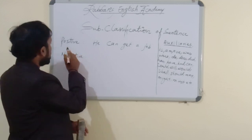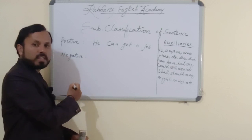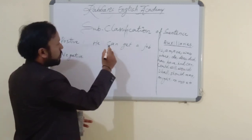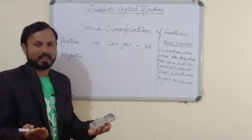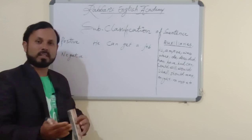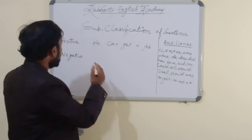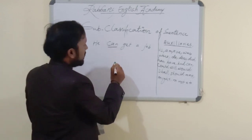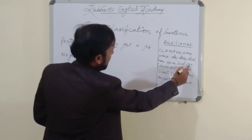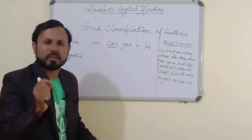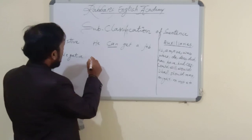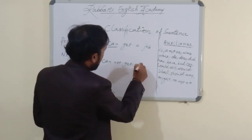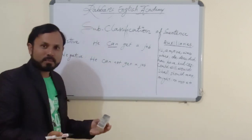'Kya woh job nahi paa sakta hai?' — So in the same way it is made in English also. How to make a negative sentence? After auxiliary, 'not' will come. Which is the auxiliary here? Can. See that 'can' is the auxiliary. After auxiliary, you have to put 'not,' and the sentence will become negative. For example: 'He cannot get a job.' Or you can say 'He can't get a job' also. 'Woh job nahi paa sakta hai.'